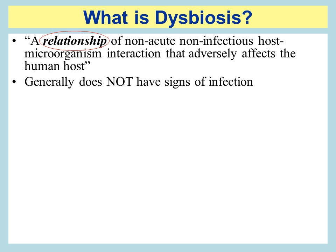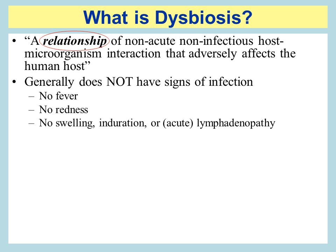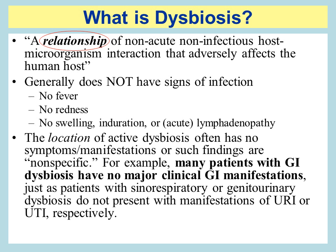It generally does not have signs of infection — so there's no fever, there's no redness, there's no swelling, and there's no acute lymph gland hyperplasia or hypertrophy. The location of the active dysbiosis often has no signs or symptoms, or such findings are nonspecific. For example, many patients with gastrointestinal dysbiosis have no major clinical GI manifestations, just as patients with sinorespiratory or genitourinary dysbiosis do not present with manifestations of an acute upper respiratory infection or urinary tract infection, respectively.